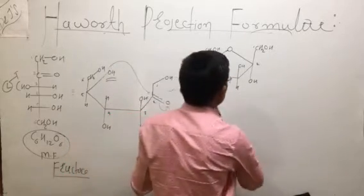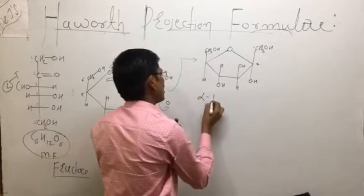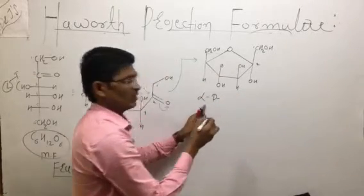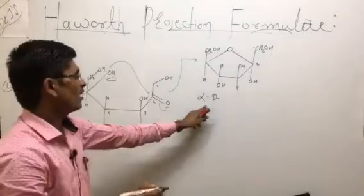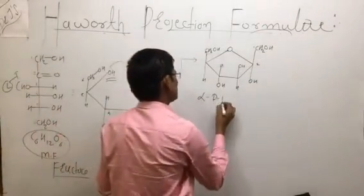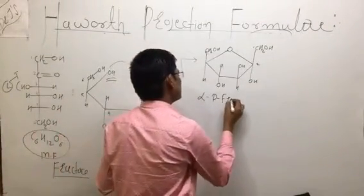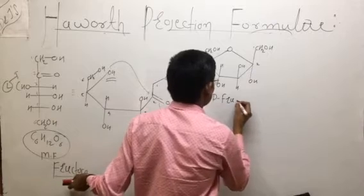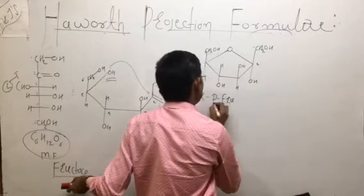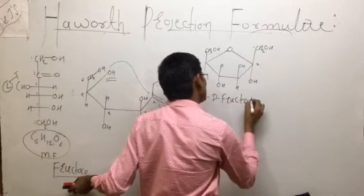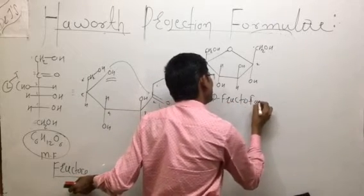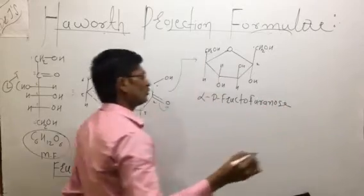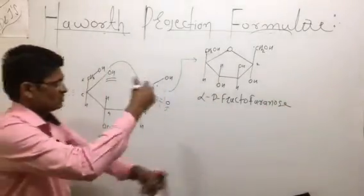And this is alpha D. This is alpha D. What is the name? Alpha D. This is furanose. So this is what? Alpha D fructofuranose.